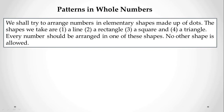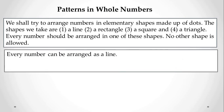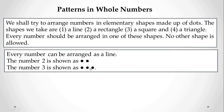We shall try to arrange numbers in elementary shapes made up of dots. The shapes we take are line, rectangle, square, and triangle. Every number should be arranged in one of these shapes — no other shape is allowed. Every number can be arranged in a line. Suppose the number is two: it can be arranged as two dots in a line. The number three: one dot, two dots, three dots. All numbers can be arranged in the form of lines.